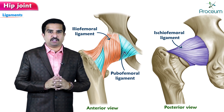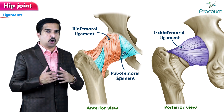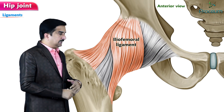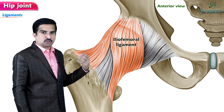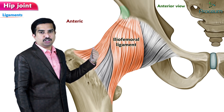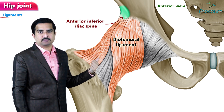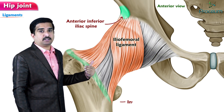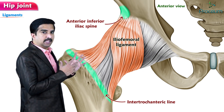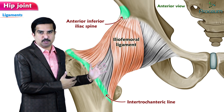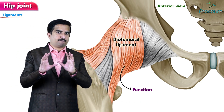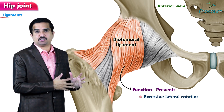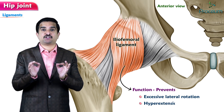Let us concentrate on the outer ligaments. The first outer ligament is the iliofemoral ligament. This attaches superiorly to the anterior inferior iliac spine and to the acetabulum, and inferiorly to the intertrochanteric line, creating a Y shape. Its important function is that it prevents excessive lateral rotation and hyperextension of the hip.